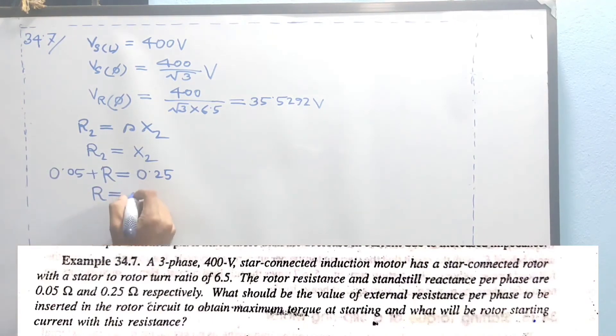When we start at maximum torque, we add external resistance of 0.2 ohm. And if we start at the same time, we need to find the rotor starting current with this resistance. What will be rotor starting current with this resistance?